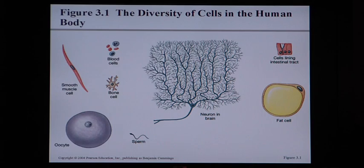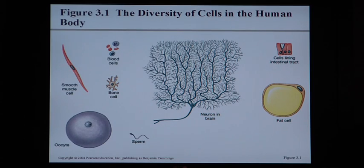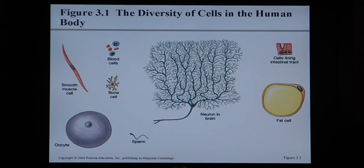This picture from the anatomy textbook shows the diversity of cells in the human body — how incredibly different cells can look from one part of the body to another. A lot of times in biology we see perfect, cute little circular cells, which are a great starting point, but cells actually have many different shapes and appearances throughout the body.